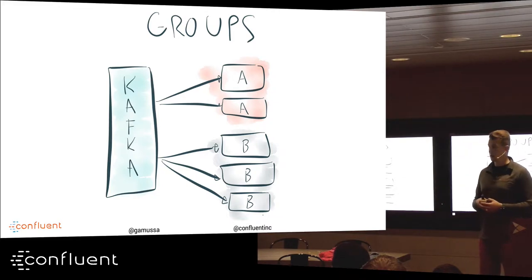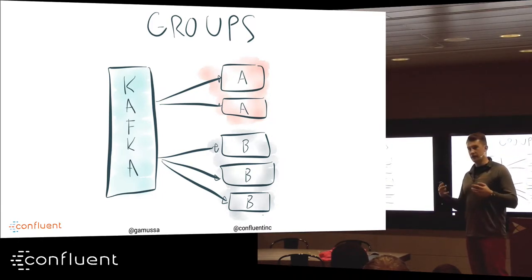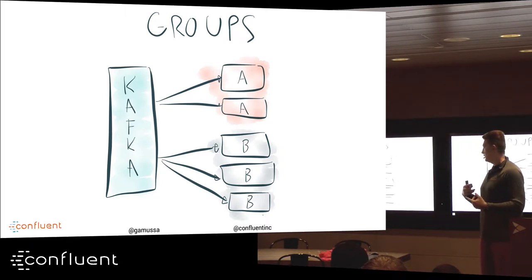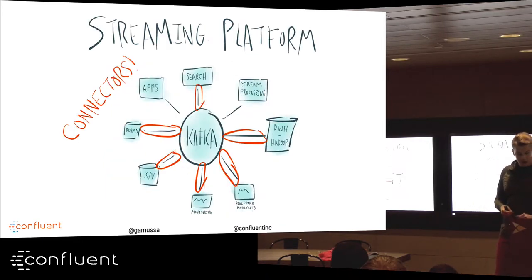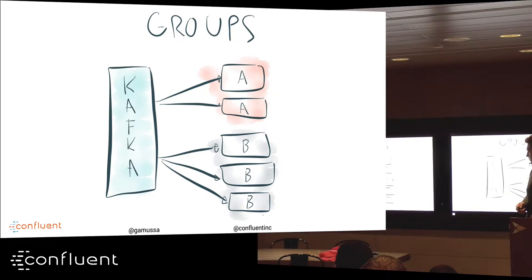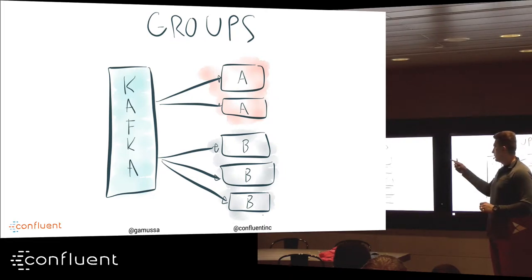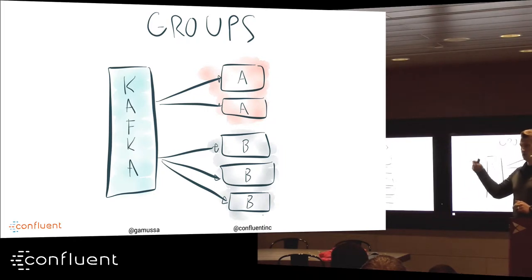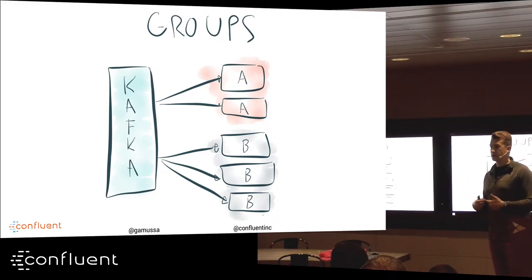Consumers can be grouped into a consumer group and read from the same topic or multiple topics, but each consumer reads from individual partitions. The partition becomes the scalability unit — you can increase the number of consumers in the group to consume data per partition faster. If an application fails, the consumer group automatically rebalances and assigns consumers to new partitions, so your processing won't stop.